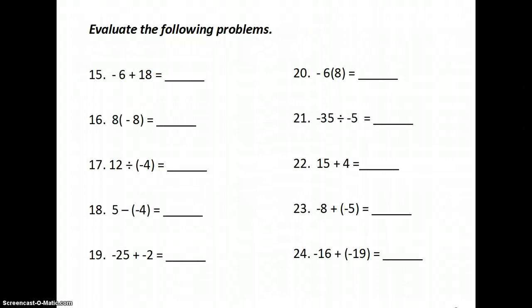-6 + 18. Signs are different, so I have to take the 18 - 6, which gives me 12. And I keep the sign of the larger value, which is positive. 8 times -8. Negative times a positive is a negative. 8 × 8 is 64. Next one, 12 divided by -4. Positive divided by negative is negative. So 12 divided by -4 is -3.